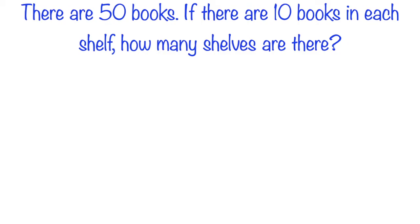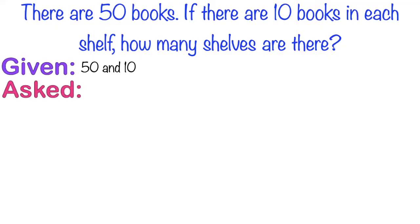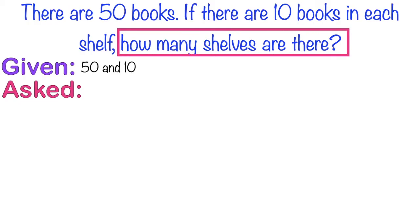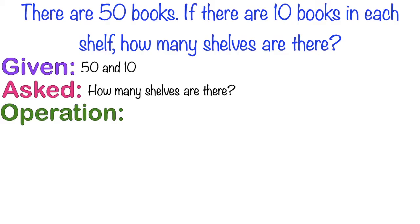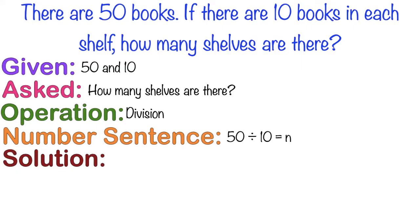Let's have the last example. There are 50 books. If there are 10 books in each shelf, how many shelves are there? The given numbers are 50 and 10 books. What is the problem asking? How many shelves are there? The operation to be used is division. The number sentence is 50 divided by 10 equals n.